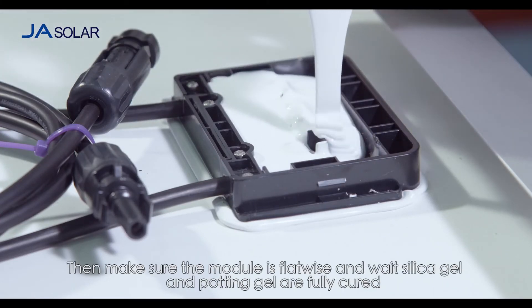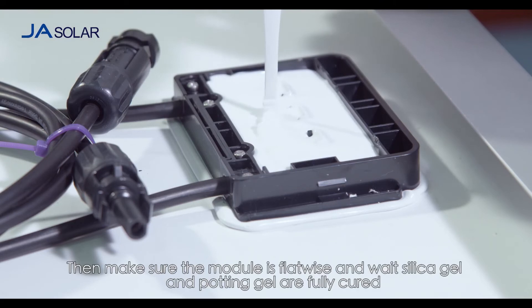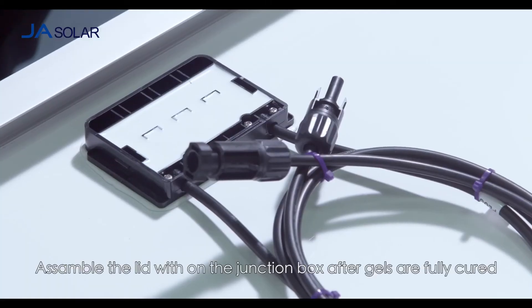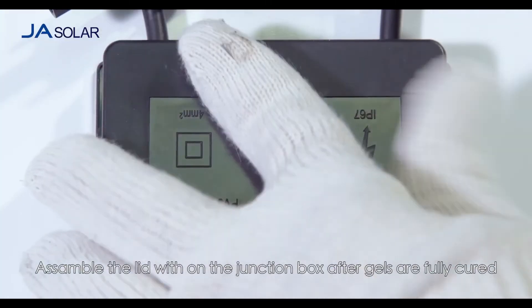Then make sure the module is flat wise and wait until silica gel and potting gel are fully cured. Make sure the curing time is more than 4 hours. Assemble the lid on the junction box after gels are fully cured.